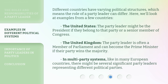Different countries have varying political structures, which means the role of a party leader can differ. Here, we'll look at examples from a few countries. In the United States, the party leader might be the president if they belong to that party, or a senior member of Congress. In the United Kingdom, the party leader is often a member of parliament and can become the prime minister if their party wins the majority. In multi-party systems, like in many European countries, there might be several significant party leaders representing different political parties.